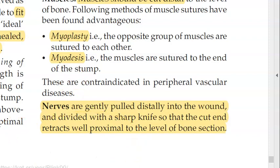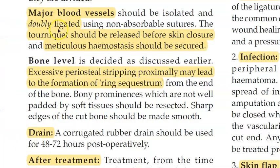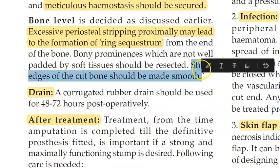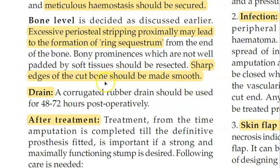For blood vessels, ligate them. Then release the tourniquet and check that there is no bleeding because you have ligated properly. Regarding the bone, avoid excessive periosteal stripping proximally, as it may lead to the formation of a ring sequestrum. Sharp edges of the cut bone should be smoothed. Finally, place a drain to allow all fluid and exudates to drain out.